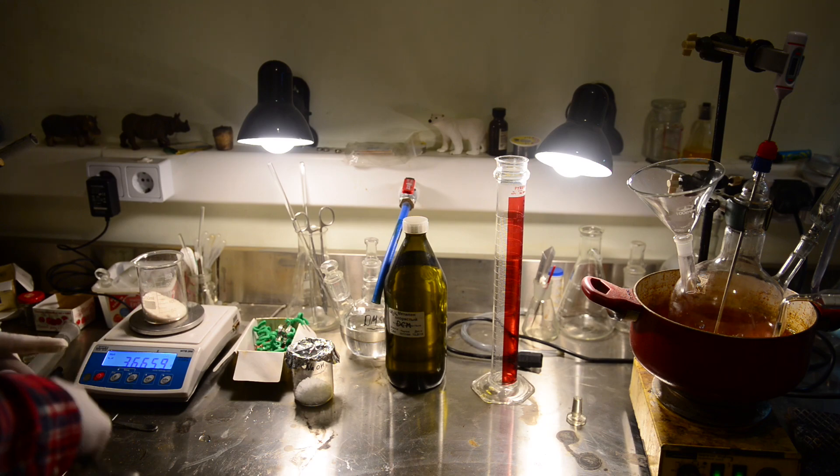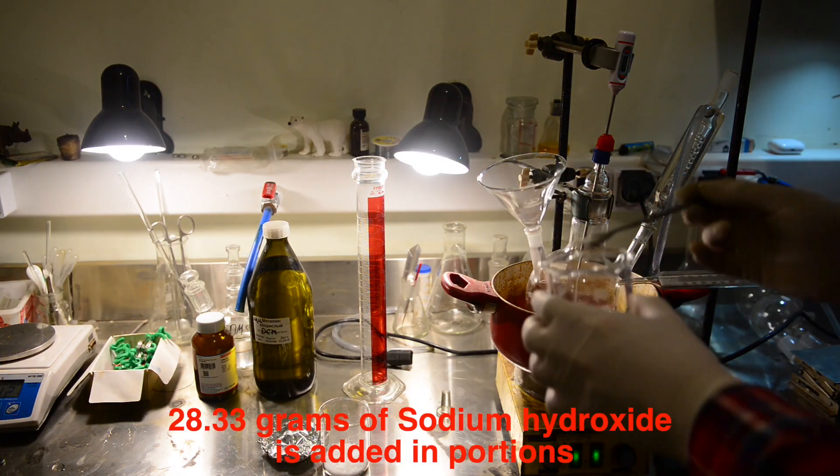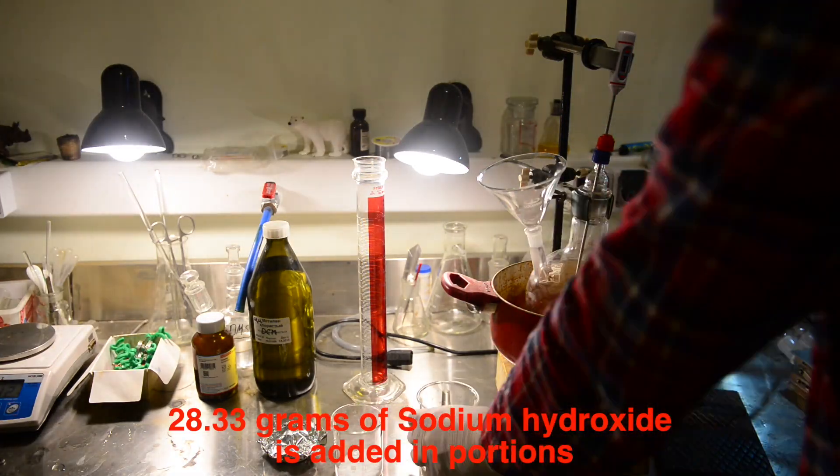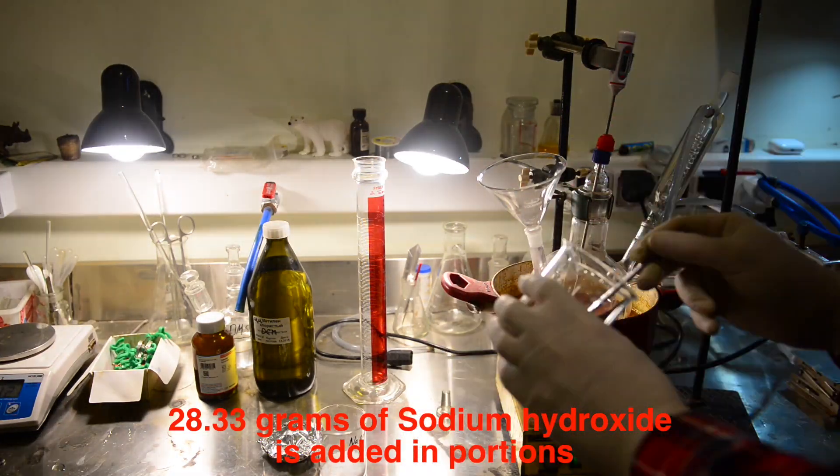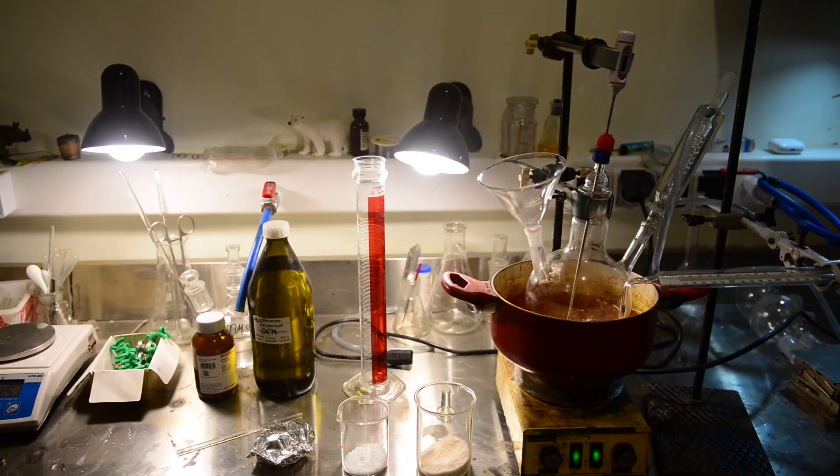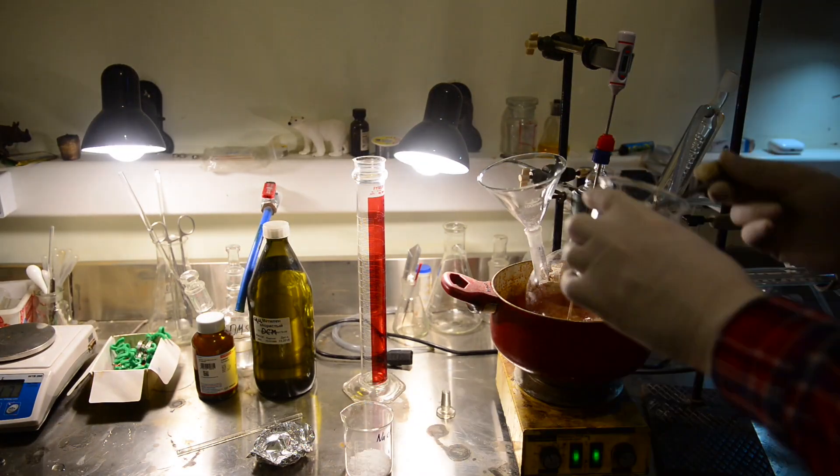According to the procedure, the catechol and sodium hydroxide should be added portion by portion while the solution of dichloromethane is heated. Unfortunately, in the procedure the addition rate is not clearly defined. We were expecting the dichloromethane to start to boil at around 40 degrees, and we were in a rush to finish the addition of catechol and the base.